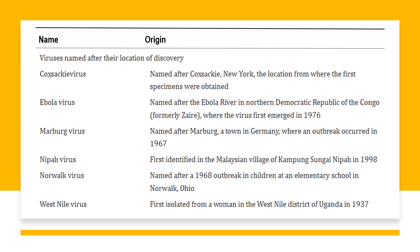Viruses were also named after their location of discovery, like the Coxsackie virus, named after Coxsackie in New York where the first specimen was observed, or the Ebola virus, named after the Ebola River in Congo where the first virus emerged. Similarly, Marburg virus, Nipah virus, Norwalk virus, and West Nile virus were all named after their location of discovery.